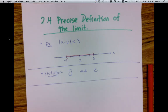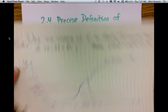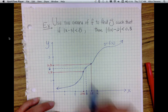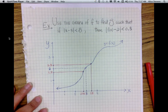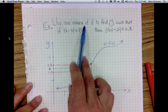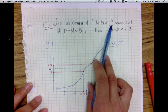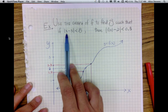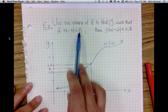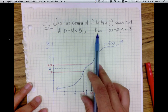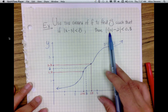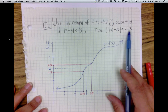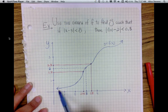Now let's take a look at this example. The question asks us to use the graph of f to find delta such that if the distance between x and 3 is smaller than delta, then the distance between f of x and 2 is less than 0.3. Here's the graph of f.